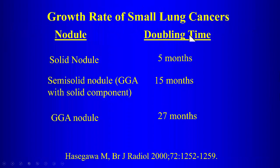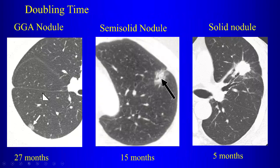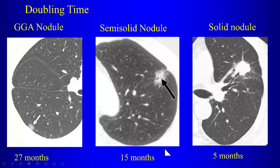For ground glass lesions, the doubling time is approximately 27 months, which is why ground glass attenuation lesions require follow-up for up to five years before we can say they're benign if there's no growth. The same applies to semi-solid lesions. For purely solid lesions, the doubling time is about five months — that's why solid lesions are followed for two years.